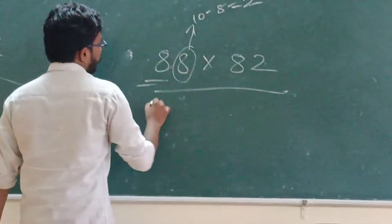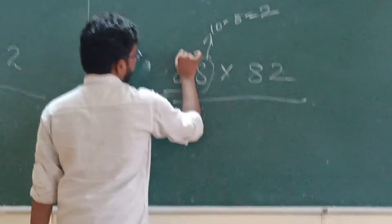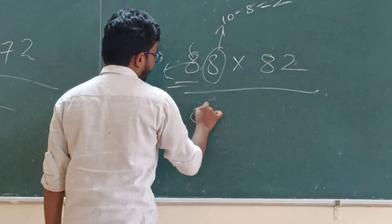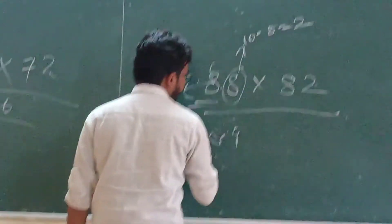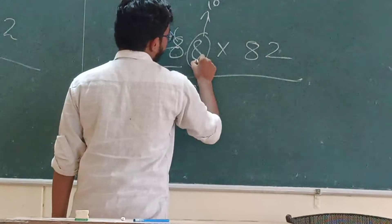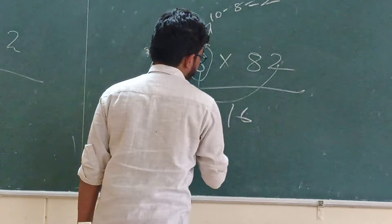And we have to multiply eight into nine. Because eight plus one, nine. Eight, nine, then seventy-two. And we have to handle the units position. This is the answer.